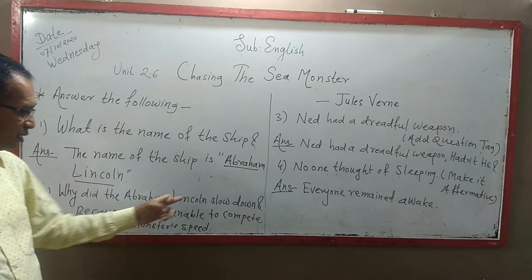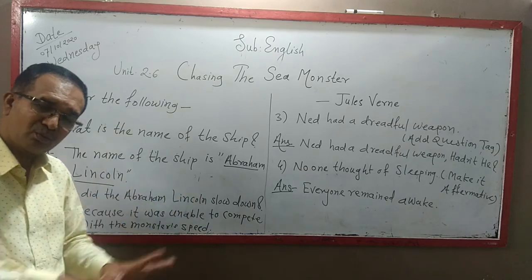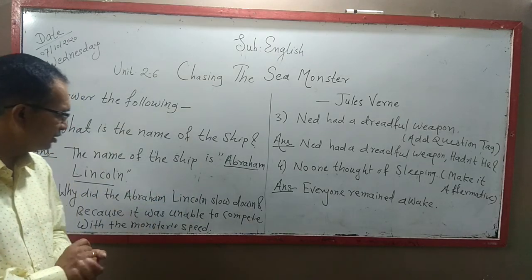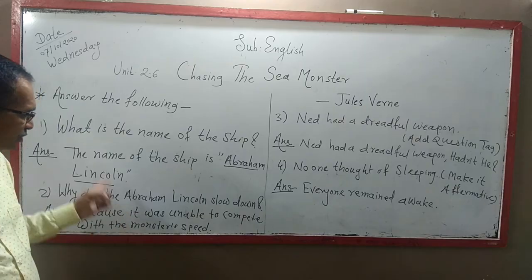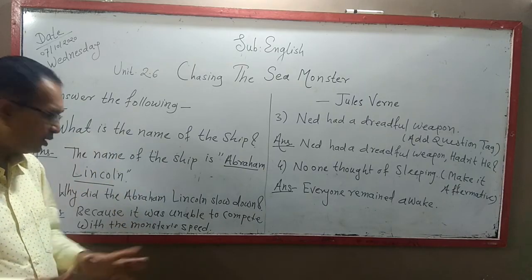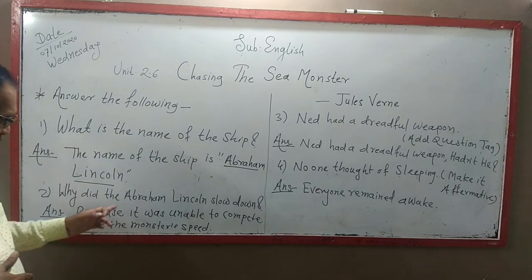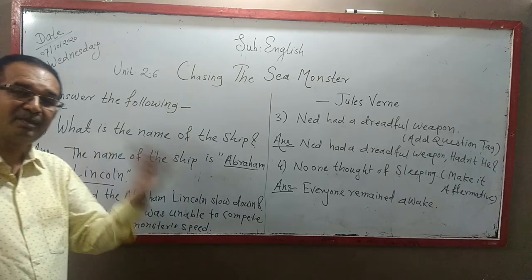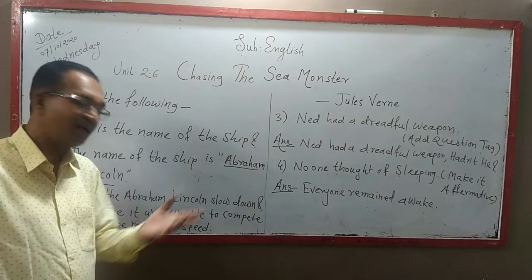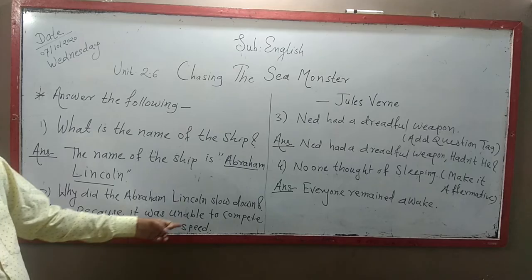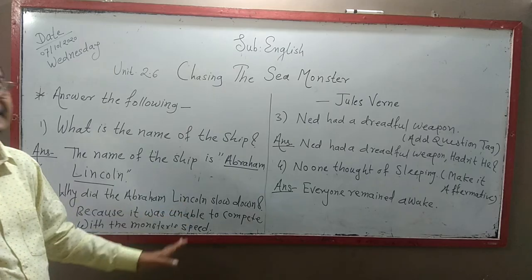Second question: Why did the Abraham Lincoln slow down? The Abraham Lincoln slowed down because it was unable to compete — 'compete' means to keep pace — with the monster's speed.